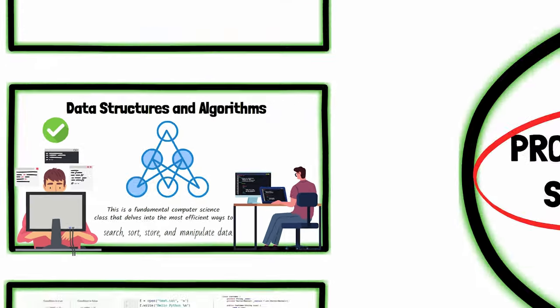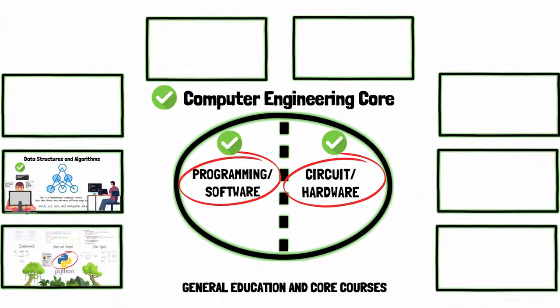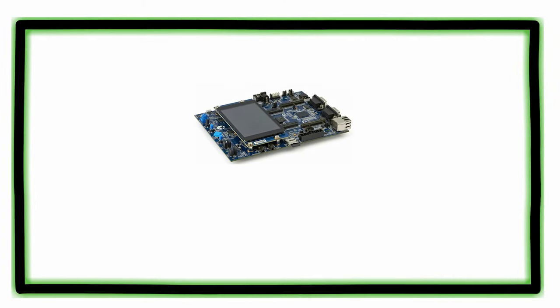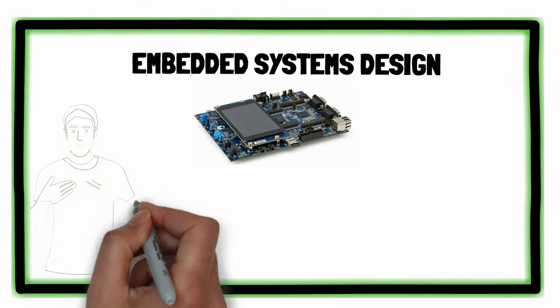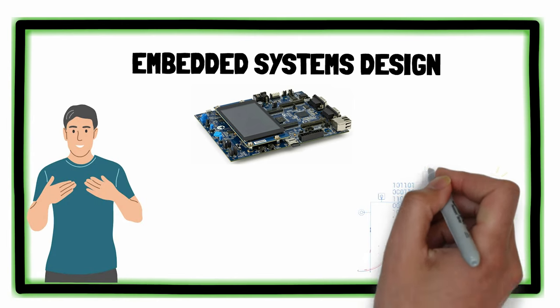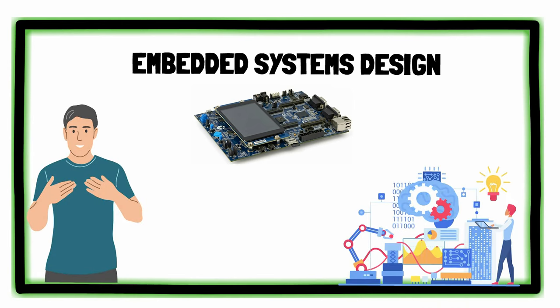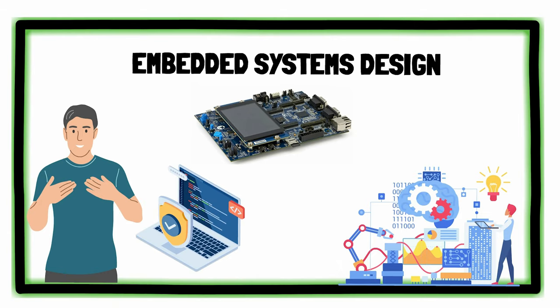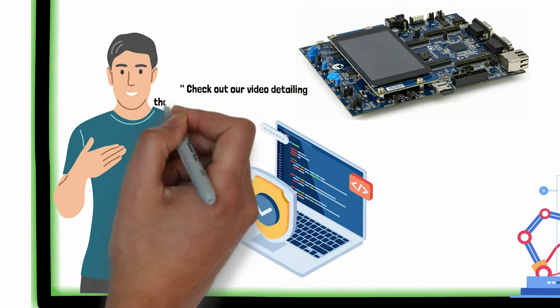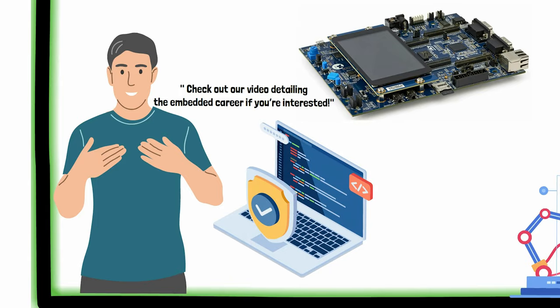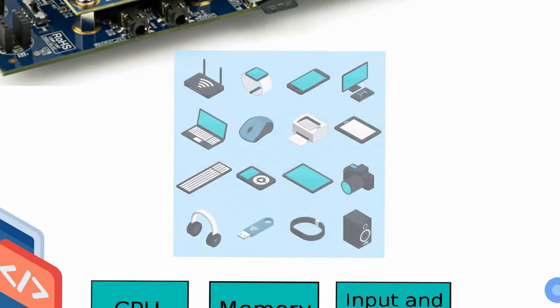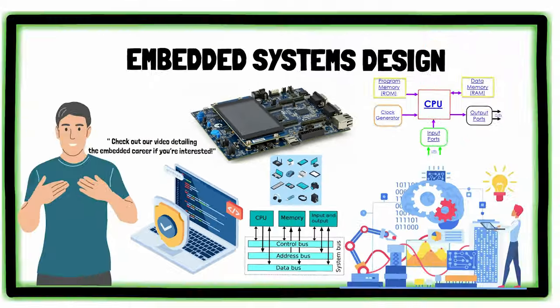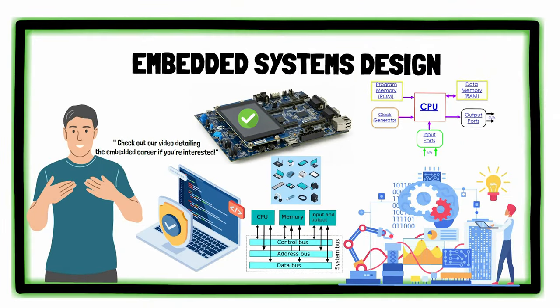Continuing across the spectrum of core computer engineering courses, we start to see some hardware peeking over the horizon. It's the Embedded Systems Design course. This is an all-inclusive introduction to the design process for one of the most popular computer engineering careers, Embedded Software and Systems Engineering. Check out our video detailing the embedded career if you're interested. Anyways, this course covers microprocessor and microcontroller architecture, bus and memory organization, peripheral communication, and a ton more topics prevalent to real-life computer engineering designs.